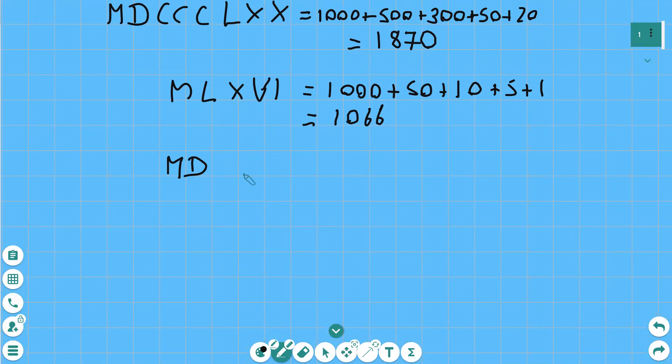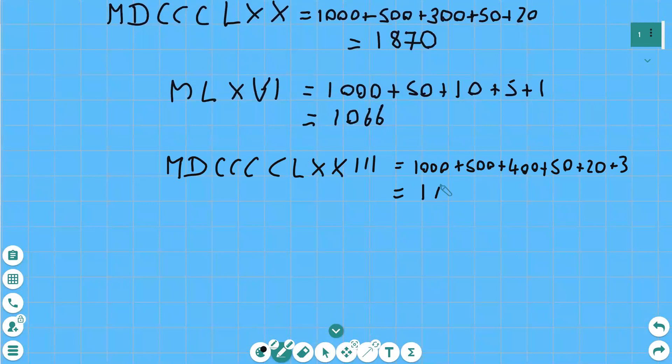And here's another one. Another important date. Well it's important to me anyway. MDCCCCLXXIII. Now we've got 1,000 haven't we. 1,000 plus D 500. CCCC. That's 4 Cs. So that's plus 400 isn't it. Then we've got L plus 50. Then plus 10 plus 20. XX is 20. Plus 3 is 1,973. That's the year I was born. So it's very important to me that one.